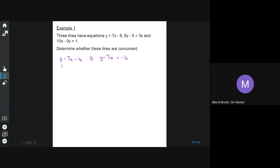So the second equation is 8y minus 5 equals 3x. And again, we want variables on the left, number on the right. So we're going to end up with 8y minus 3x equals positive 5. So that's equation 1, and that's equation 2.